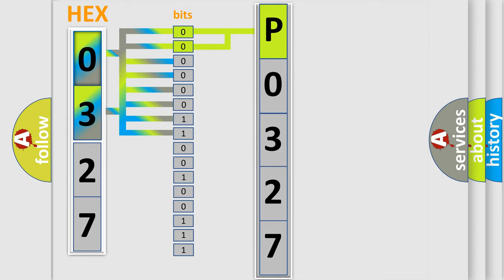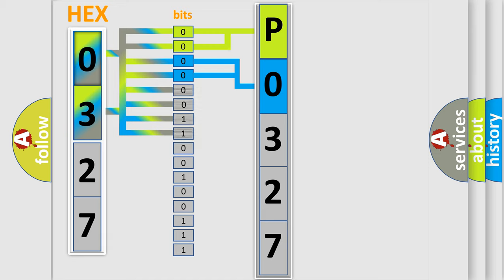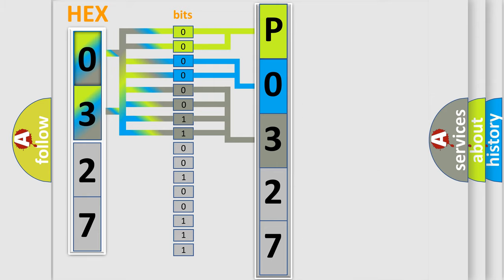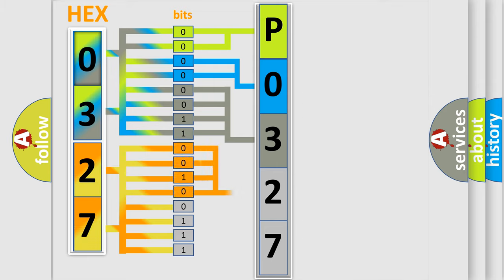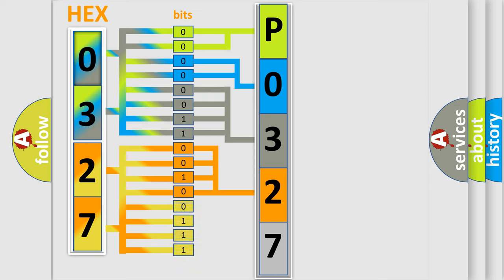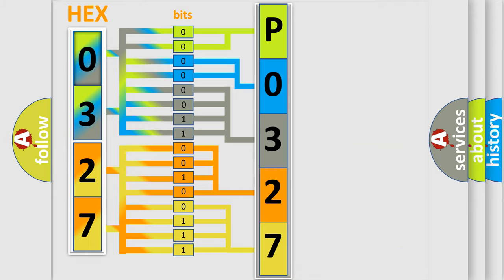The next two bits determine the second character. The last bits of the first byte define the third character of the code. The second byte is composed of a combination of eight bits. The first four bits determine the fourth character of the code, and the combination of the last four bits defines the fifth character. A single byte conceals 256 possible combinations. We now know how the diagnostic tool translates received information into a more comprehensible format.